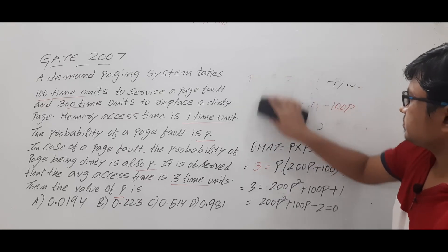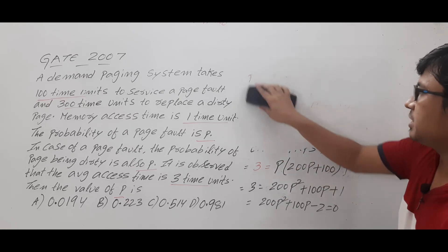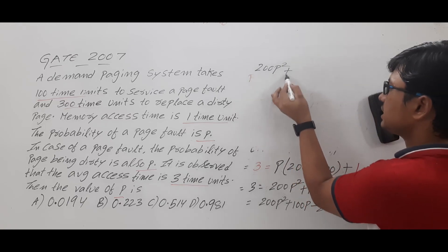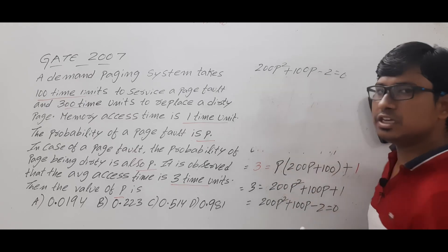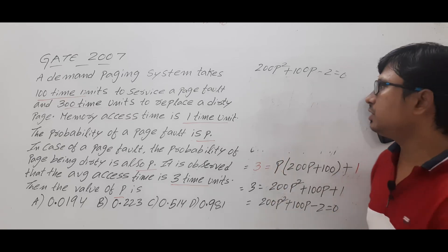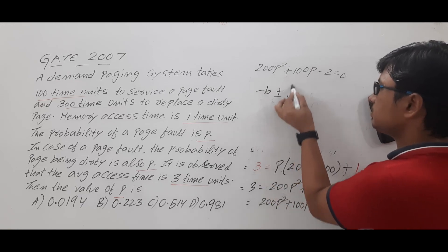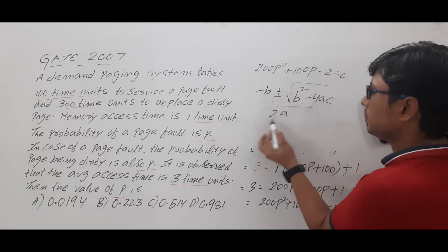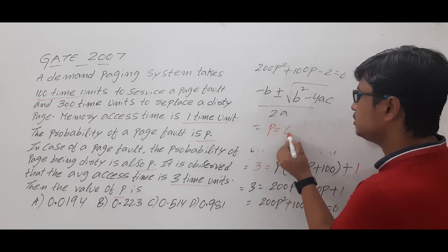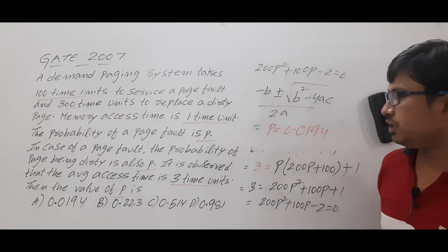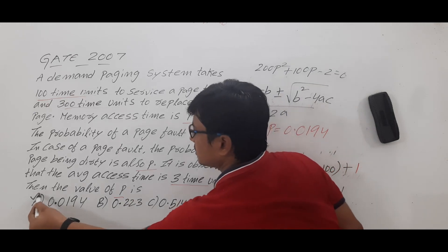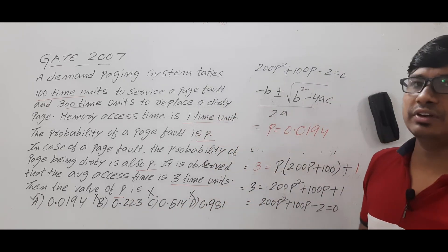This equation is in the form aX² + bX + c = 0. Using the quadratic formula: X = (−b ± √(b² − 4ac)) / 2a, and substituting the values, we get P ≈ 0.0194. Looking at the options, option A is 0.0914 — wait, the correct computed value matches option A, which is the right answer. The remaining options are wrong.